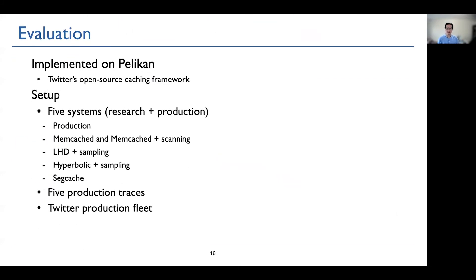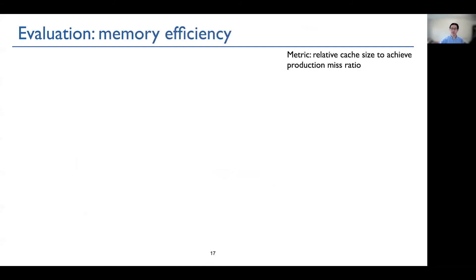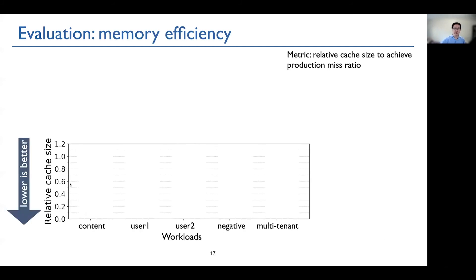Now, let's talk about evaluation. We implement Segcache on top of Pelikan, which is Twitter's open source caching framework. And we compare Segcache to two production systems and two research systems using five production traces. We evaluate using Twitter production fleet. Let's first talk about memory efficiency. And we use relative cache size as the metric.